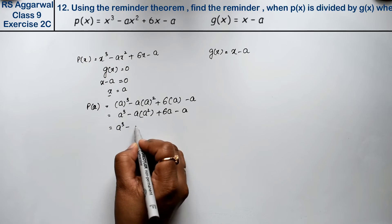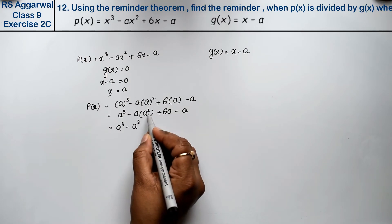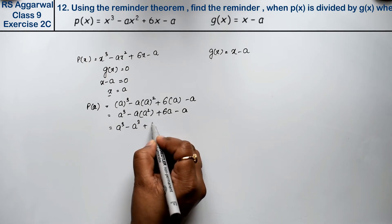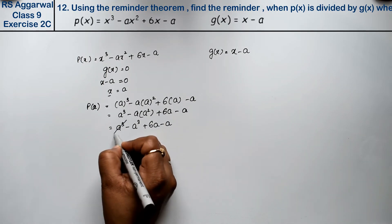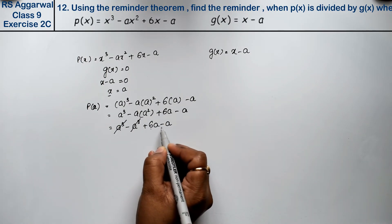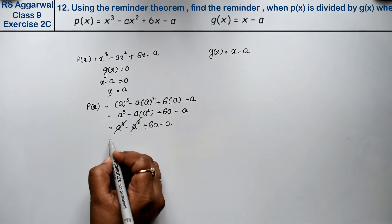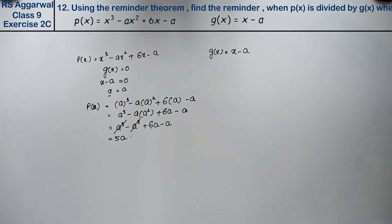So if we add the power in the multiplication, it was 3. So a cube minus a cube plus 6a minus a.